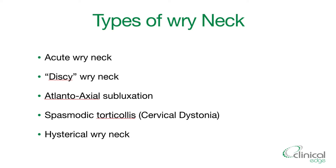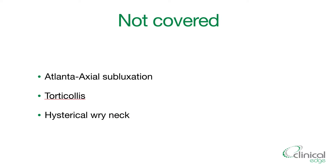We've got the acute wry neck, a discogenic wry neck, atlantoaxial subluxation, spasmodic torticollis, or hysterical wry neck. You won't see too many of the hysterical wry necks, but in this video we're not going to cover atlantoaxial subluxation and we're not going to cover torticollis or hysterical wry neck.